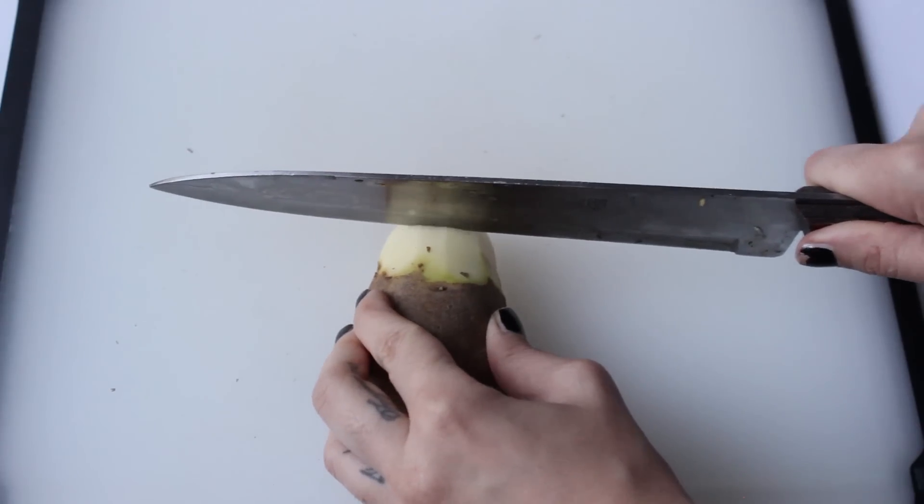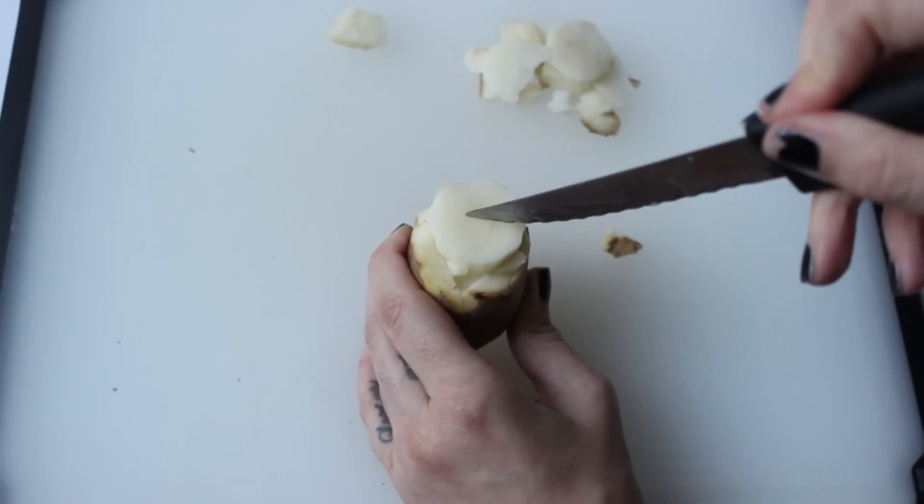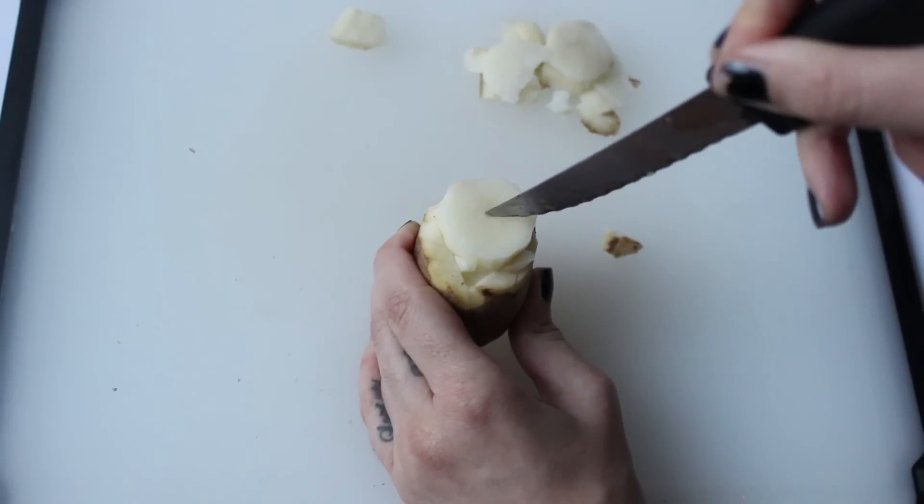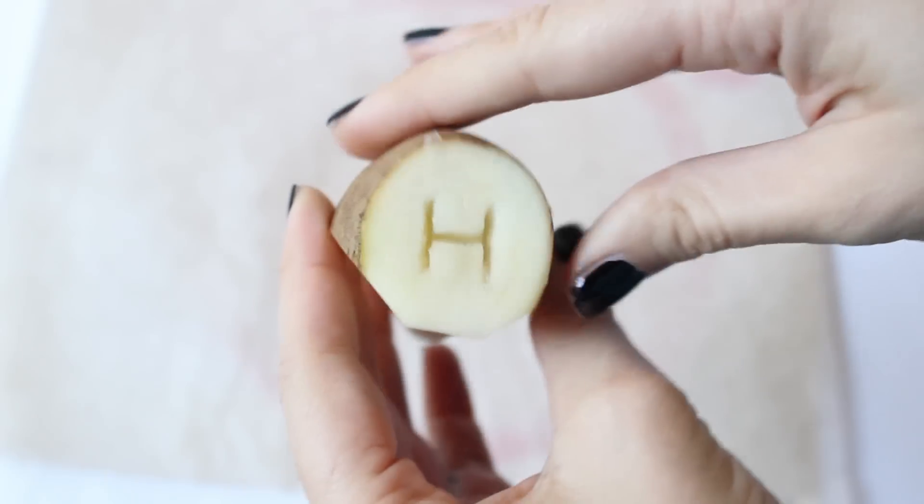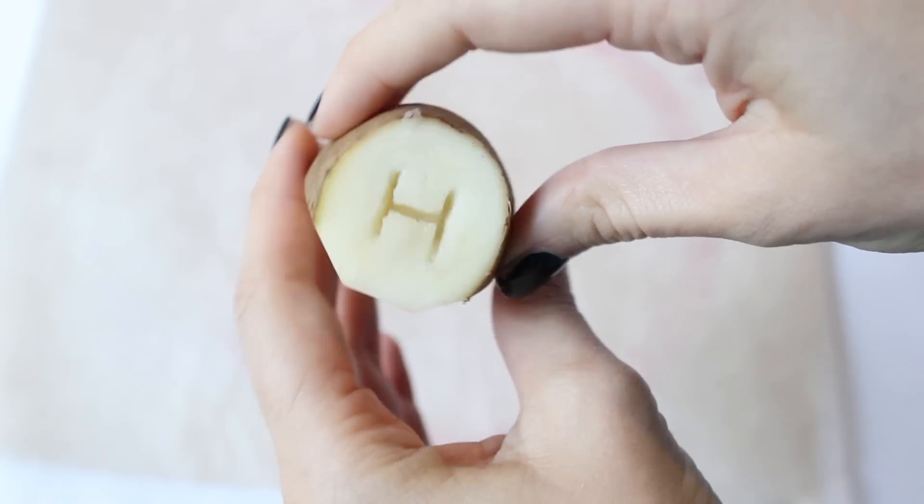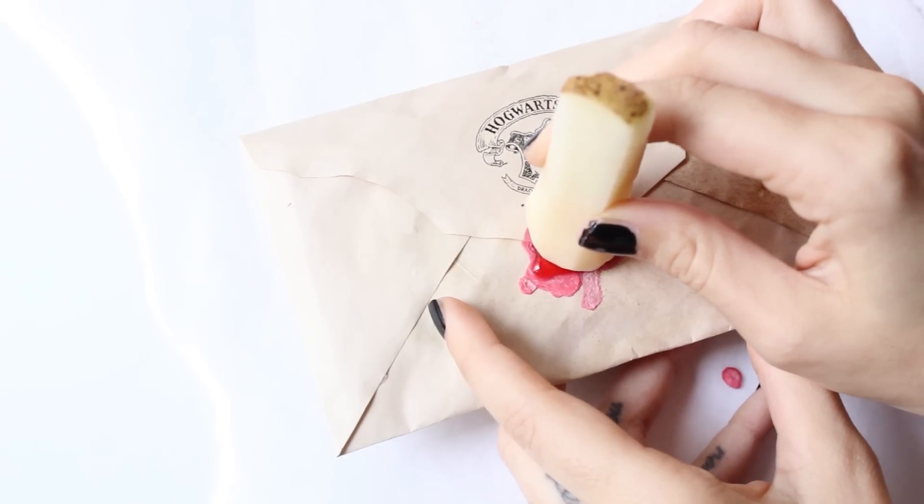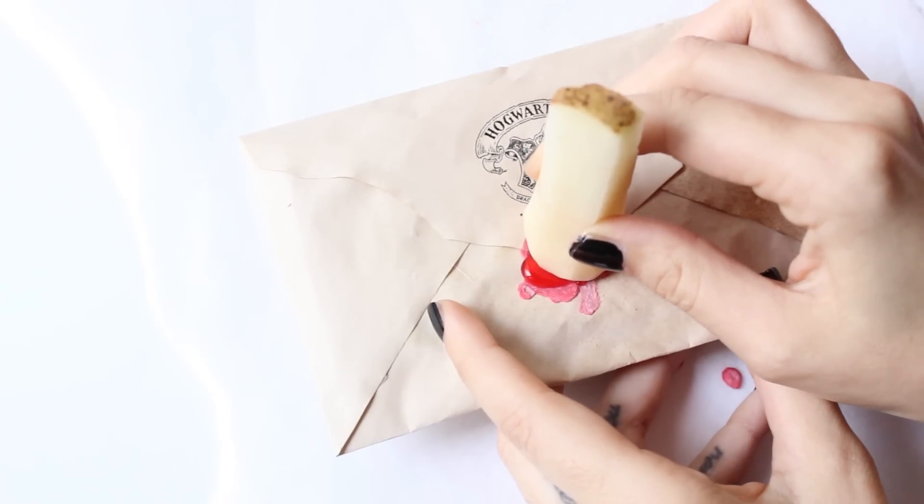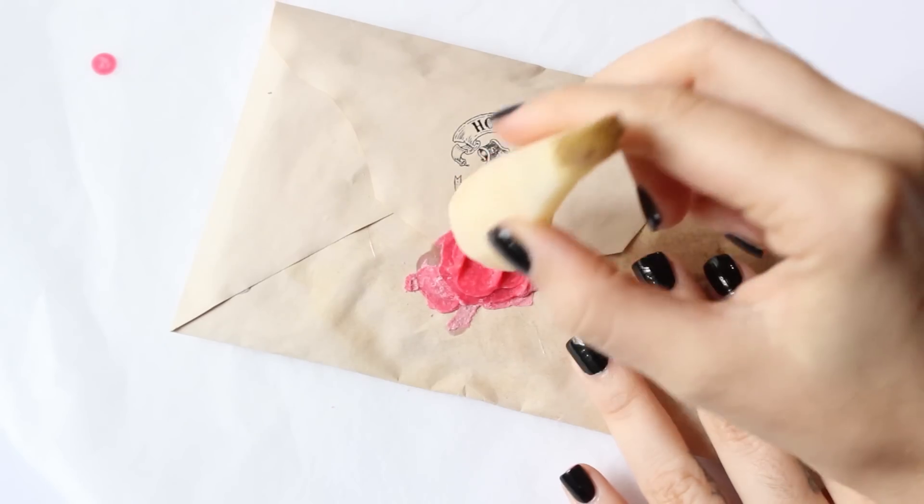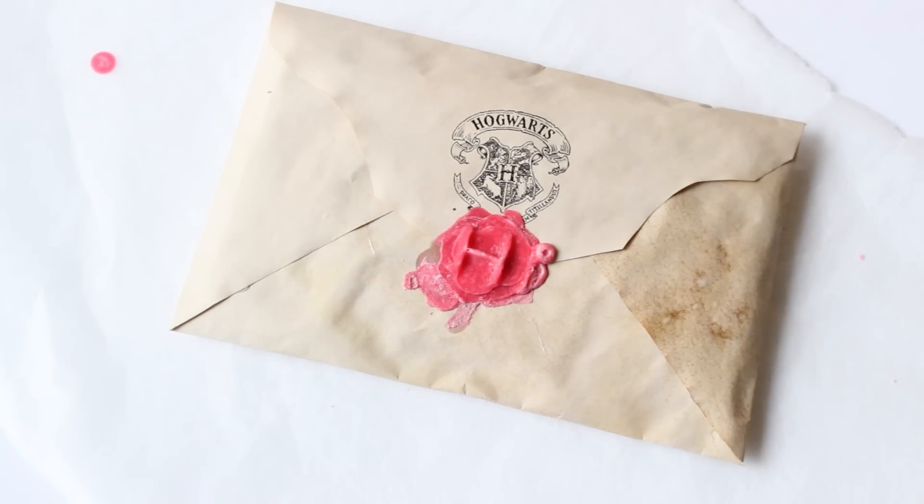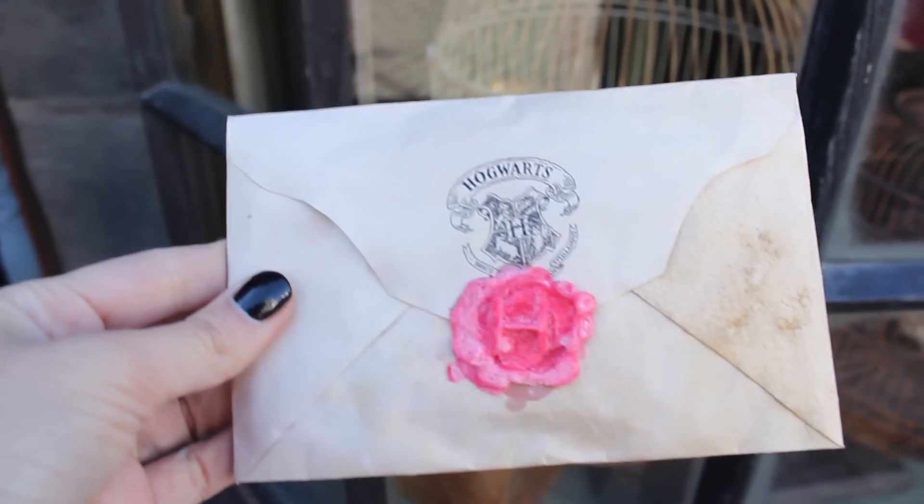Now if you want, let's make the seal. Cut a potato like this, and then with a knife or a pen recreate the Hogwarts symbol or just an H. Then melt a red candle on top of the envelope like this, press with your potato, wait that the wax is completely dry, remove the potato and that's it. Practice a few times and it's gonna be perfect.